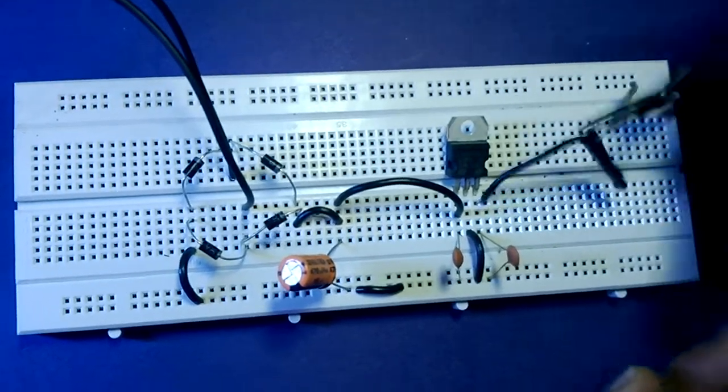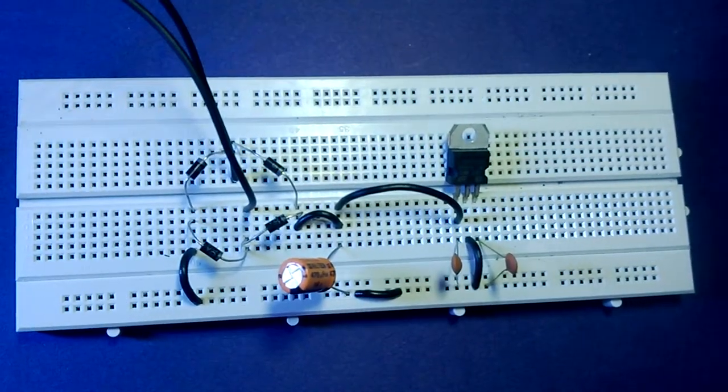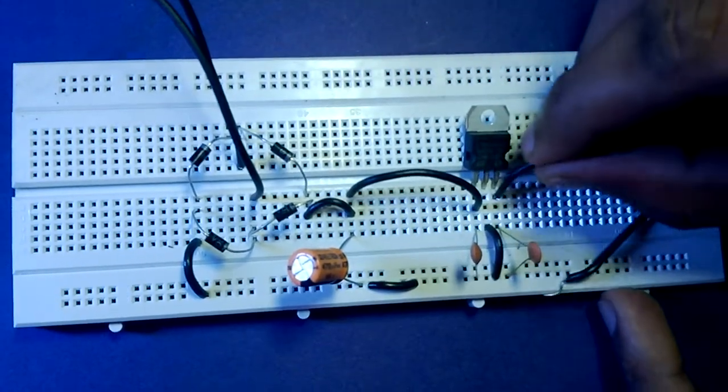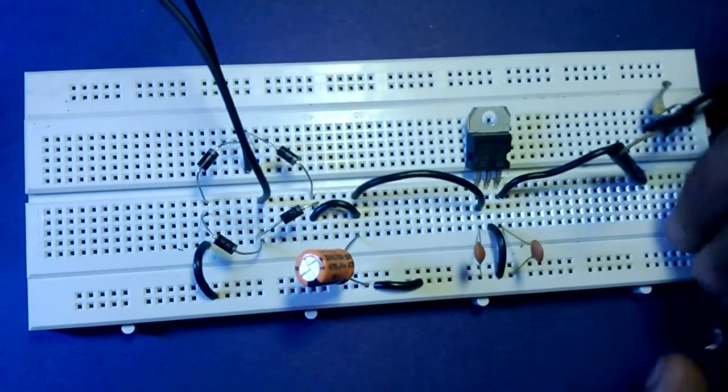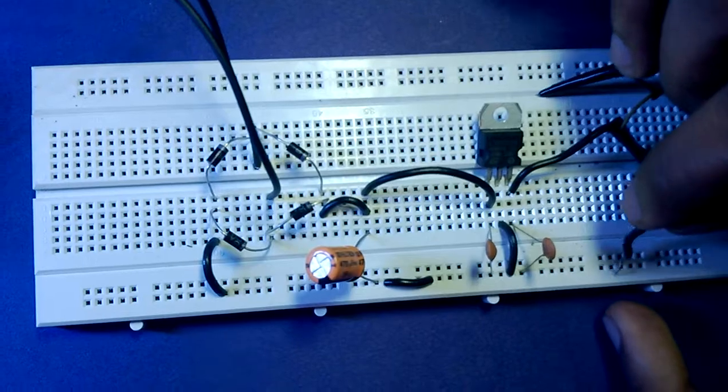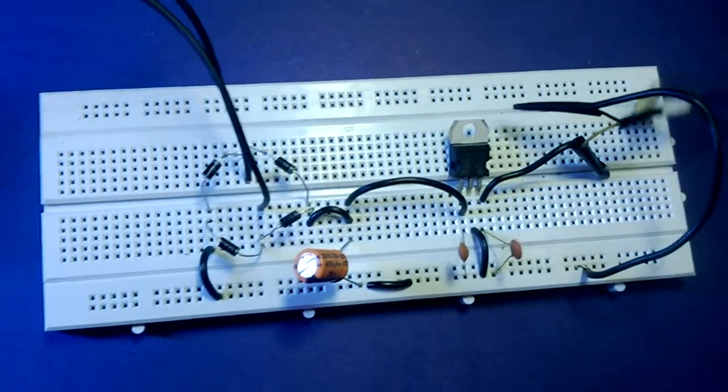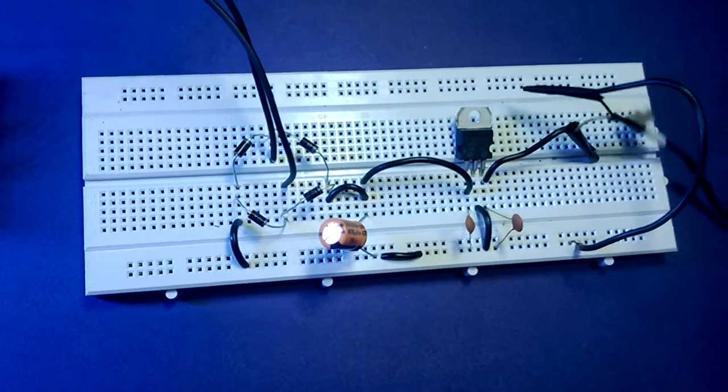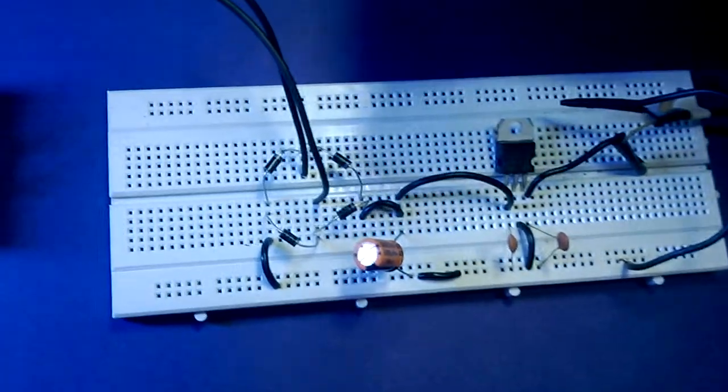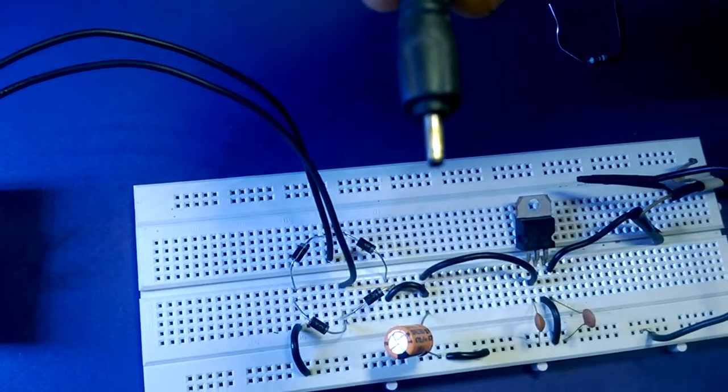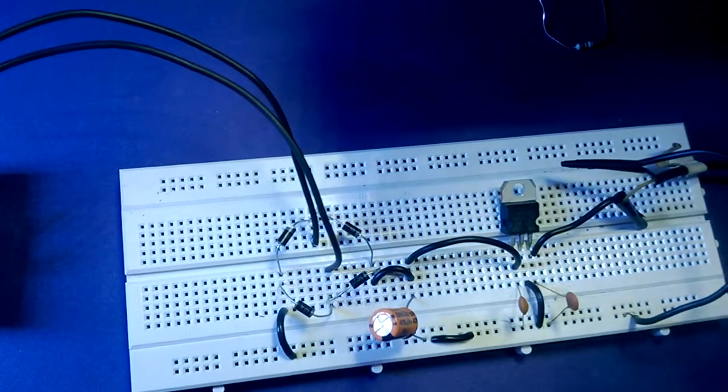Now we're going to connect the positive terminal with the output of this voltage regulator. Now we're going to ground the circuit with this negative part. This is a thin pin charger for DC socket.